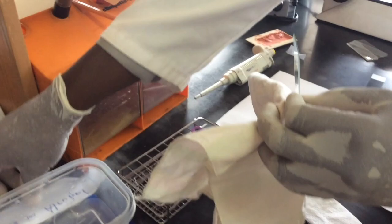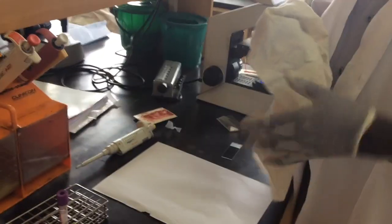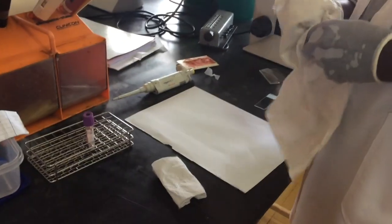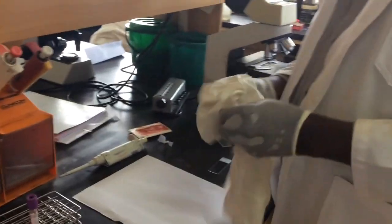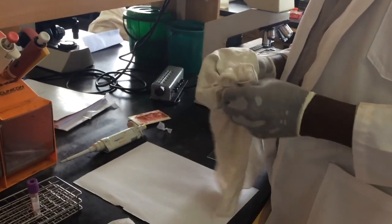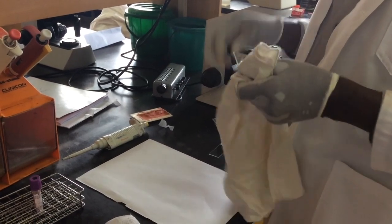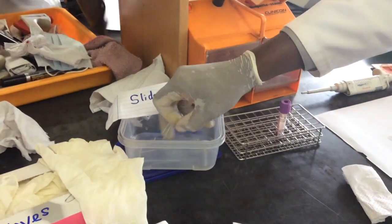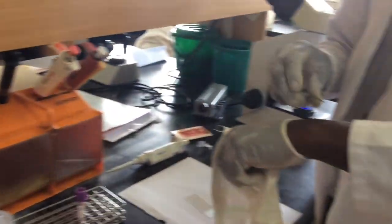And then he uses the paper towel to wipe the excess alcohol off the slide. So that's the first slide. He gets the second slide, which is going to be the spreader.